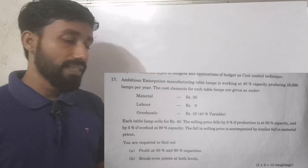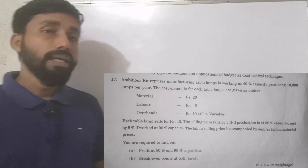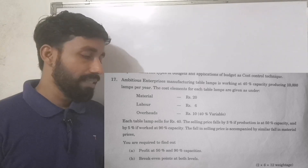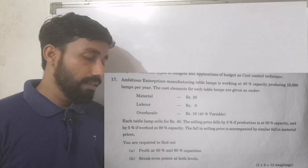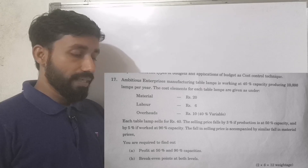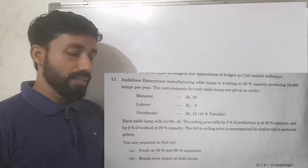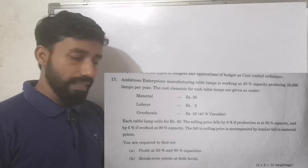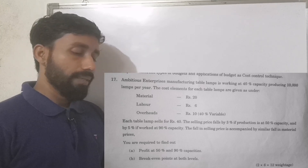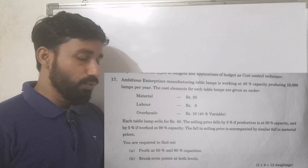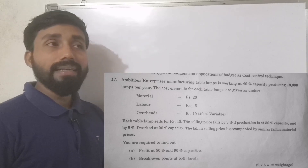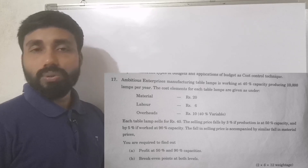Ambitious Enterprises, manufacturing table lamps, is working at 40% capacity, producing 10,000 lamps per year. The cost elements per lamp are: Material Rs. 20, Labour Rs. 60, Overhead Rs. 10, variable 40%. Each lamp sells for Rs. 40. The selling price falls by 3% at 50% capacity and by 5% at 90% capacity. The falling selling price is accompanied by a similar fall in material prices. We are required to find out profit at 50% and 90% capacity and the break-even point at both levels.